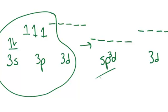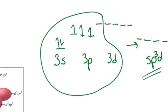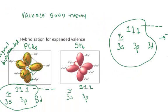But these five new sp³d orbitals then arrange themselves in space as far apart as possible in this trigonal bipyramidal shape.